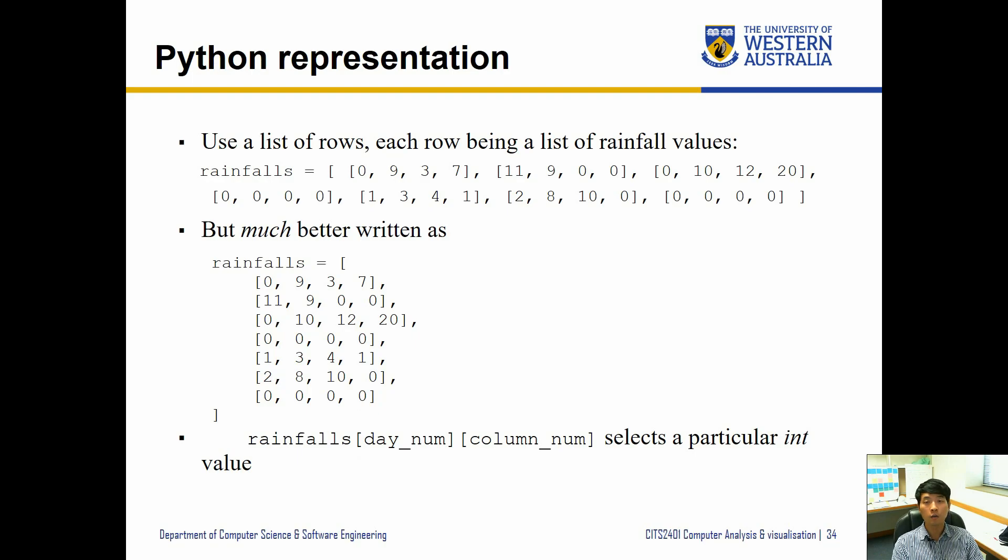So instead you can rewrite onto multiple lines where each line represents the measurement for each day. Rainfalls of the previous data can be written like this, but it's much easier to understand when you arrange it as such.